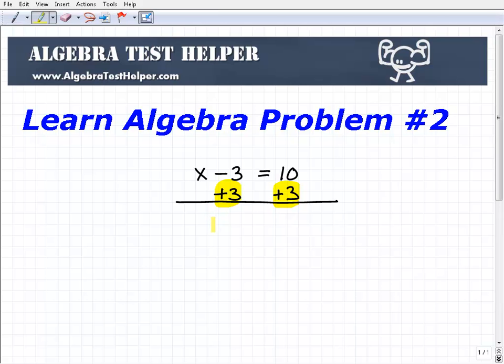So what I'm going to do now is add down in a column manner. Notice where I wrote the plus 3. I wrote it right underneath these numbers just like this. So that's how you want to do it. You want to copy the format of the way I'm working this problem.